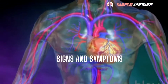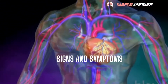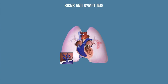Now let's have a look at the signs and symptoms of pulmonary hypertension. The signs and symptoms of pulmonary hypertension develop slowly. You may not notice them for months or even years. Symptoms get worse as the disease progresses.